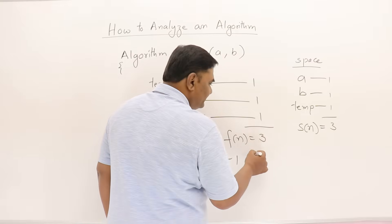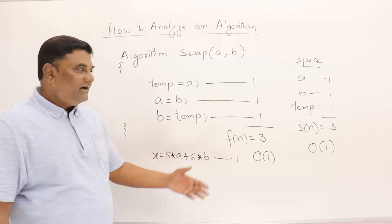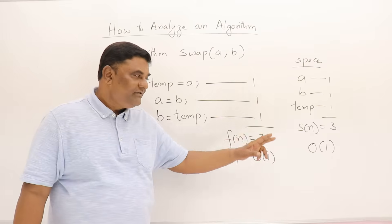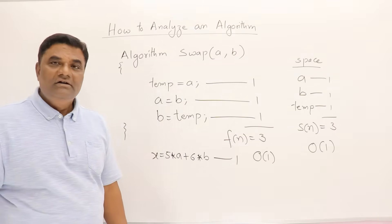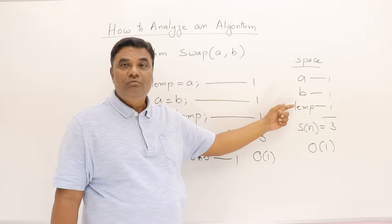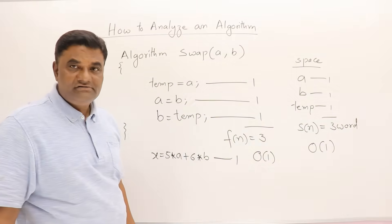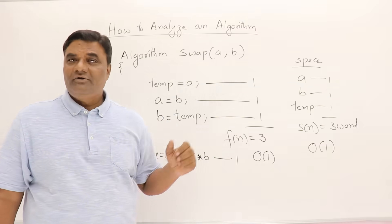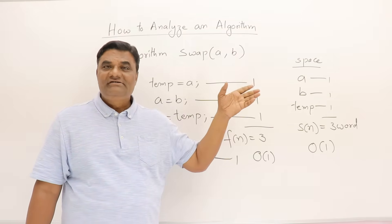So usually we represent them as order of 1. Constant means order of 1. 1 represents constant. If it is 3 also we write 1. If it is 3000 also we write 1, saying that it is constant. Value is constant. So this is how each statement is taken as one unit of time, and each variable is taken as one word. So these are 3 words. Why we are saying words there? Not bytes. We don't know. When we convert it to a program, it may be an integer type, or float type, or double type—that we don't know. That's why we say it is taking words.